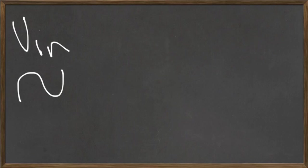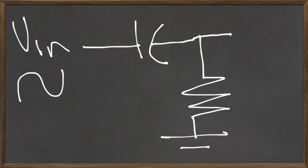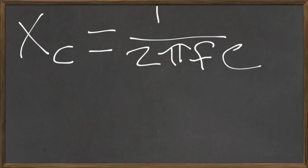There are a couple of formulas we need to understand in order to use high-pass and low-pass filters. In an AC circuit, a capacitor actually does transfer a sine wave across it. It opposes current flow but does let it pass. The opposition to current flow of a capacitor is called the reactance. The formula for reactance is X sub C, which equals 1 over 2π times the frequency times the capacitance. Frequency is in hertz, capacitance is in farads, and reactance is in ohms.